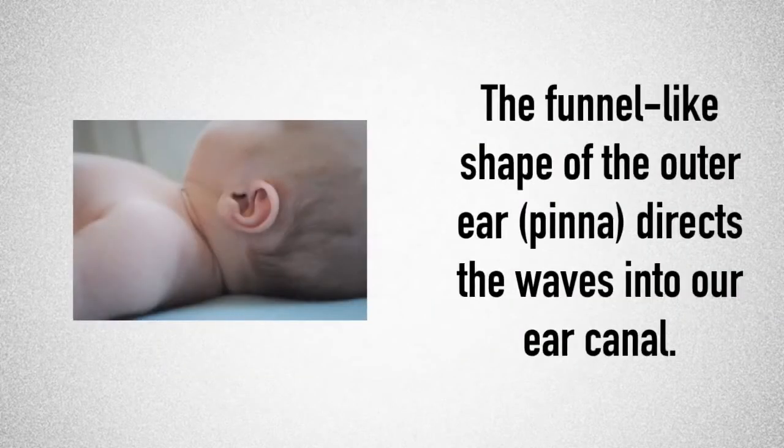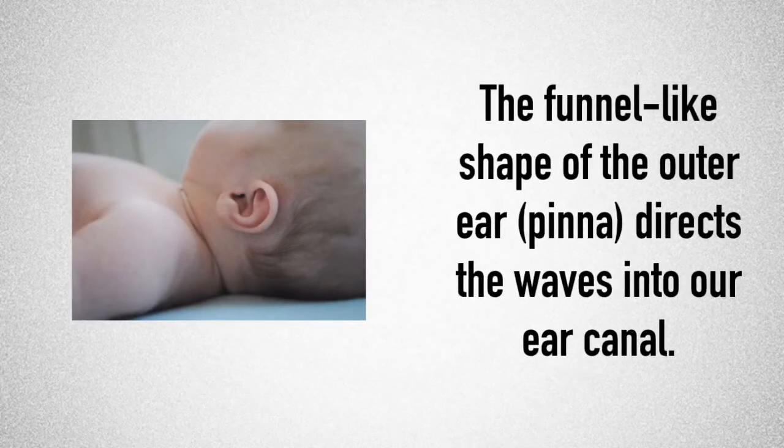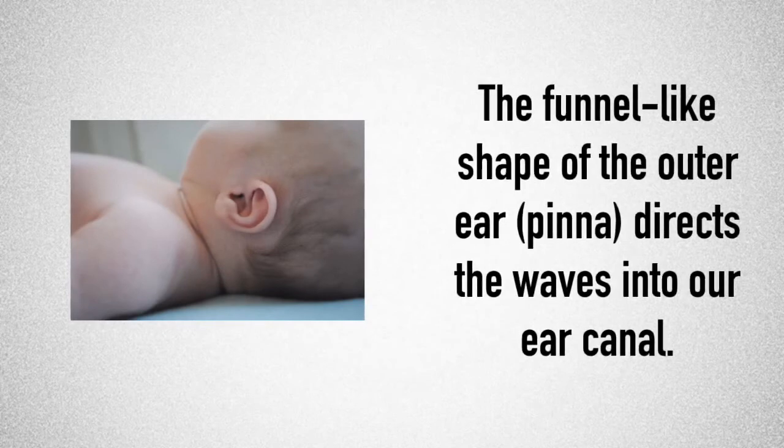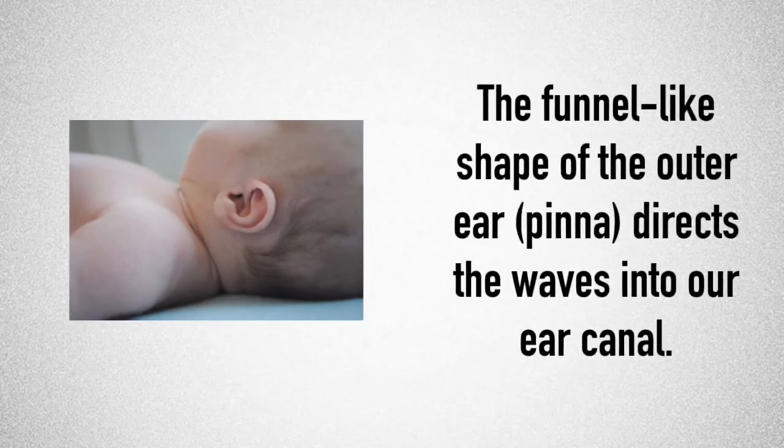So we start with the outer ear or the external ear as it is sometimes referred, and the part on the outside that we see is known as the pinna. This funnel-like shape of our outer ear helps to direct the sound waves into our ear canal.